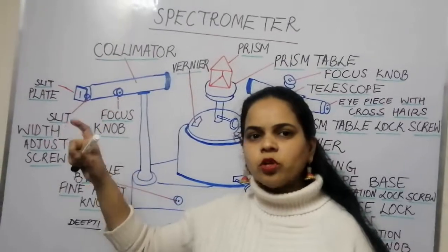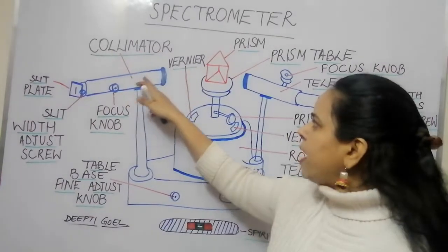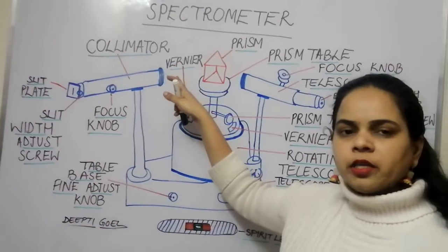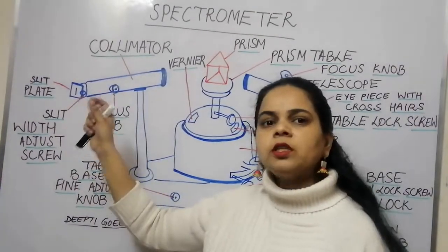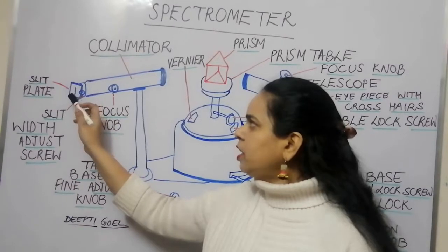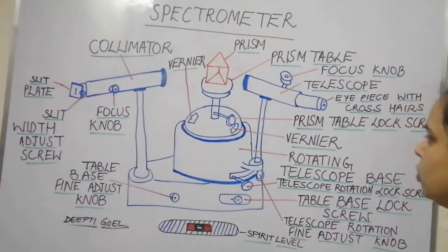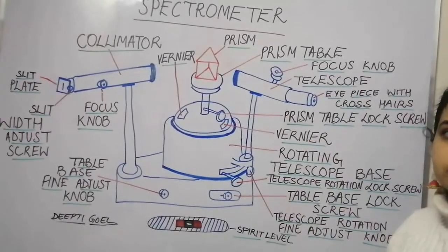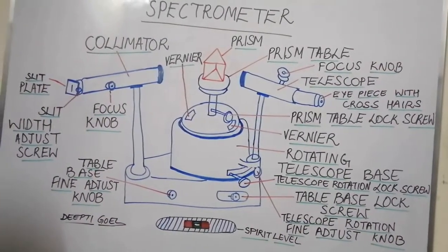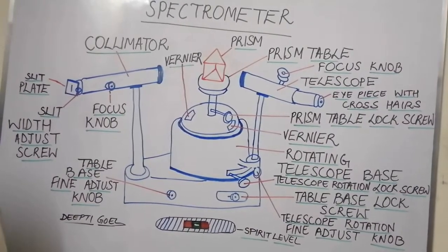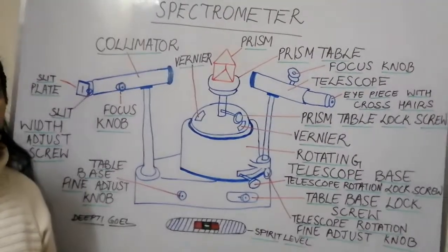After the beam crosses the collimator, a parallel beam of light emerges due to the assembly of two convex lenses inside it. Moving to the second part — the telescope — it also uses an assembly of two convex lenses that focus the light beam after it has interacted with the optical instrument placed on the prism table.